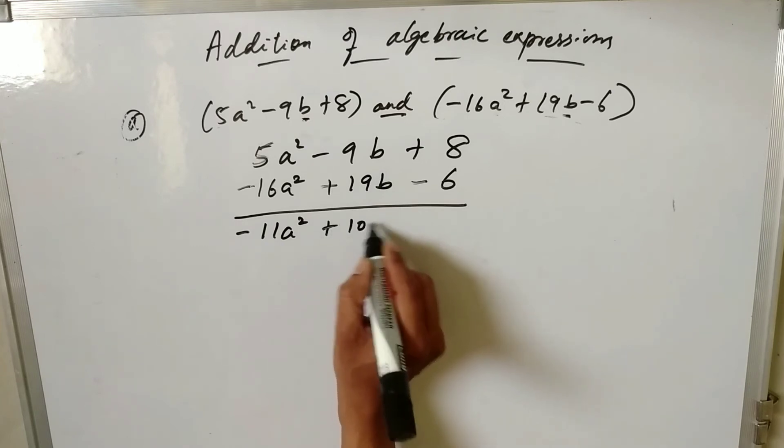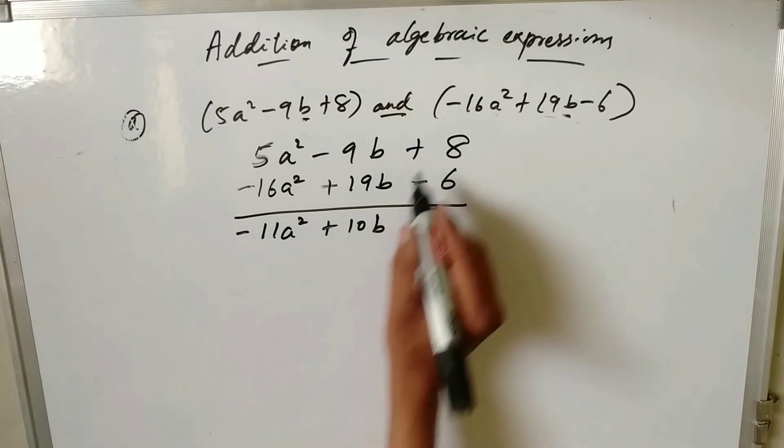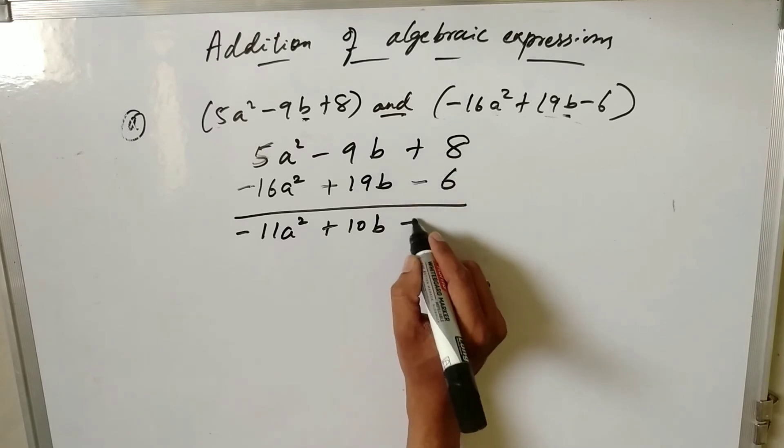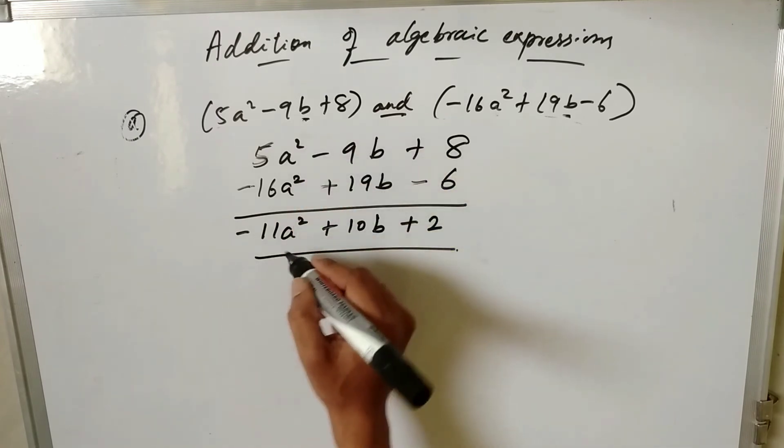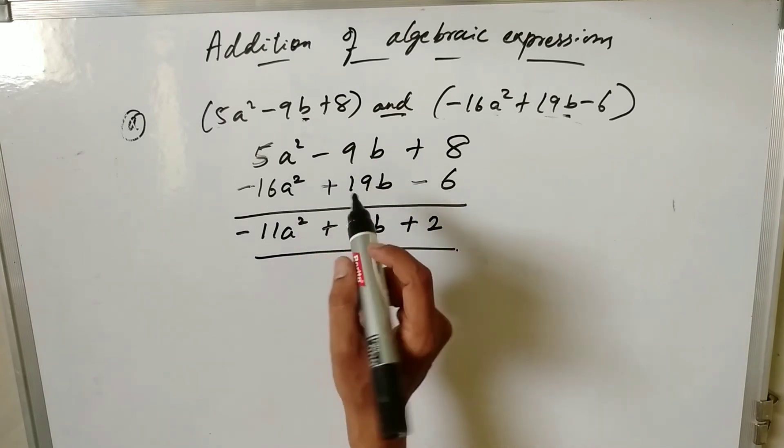8 - 6 = +2. So this is how you need to add the two algebraic expressions. Please share our channel.